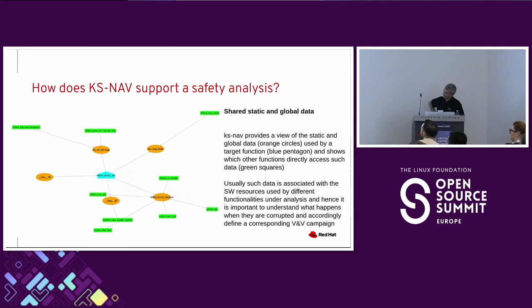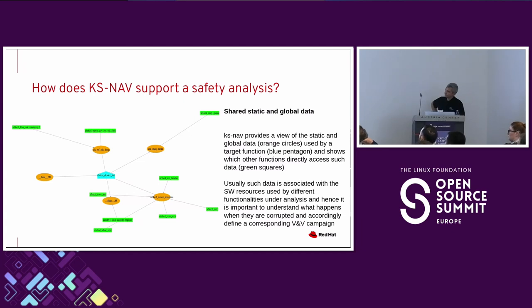KSNav is also able to highlight global and static data — shown as orange circles — that is used by a target function. This diagram says: this function is touching this static and global data, and here are other functions that are also accessing this data. This is very important because it highlights what software resources are shared — identified with static and global data — and what neighboring functions can either interfere or are using the same resources. This is important to drive your V&V campaign and complete your safety analysis.